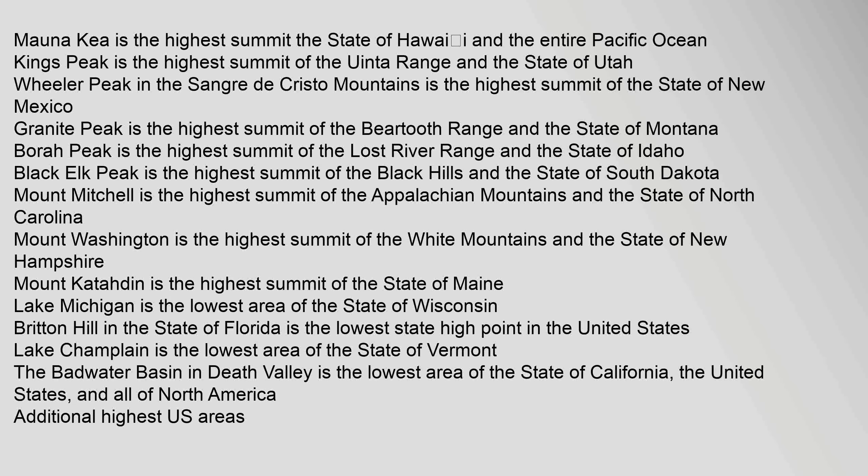Mauna Kea is the highest summit in the state of Hawaii and the entire Pacific Ocean. Kings Peak is the highest summit of the Uinta Range and the state of Utah. Wheeler Peak in the Sangre de Cristo Mountains is the highest summit of the state of New Mexico. Granite Peak is the highest summit of the Beartooth Range and the state of Montana. Bora Peak is the highest summit of the Lost River Range and the state of Idaho. Black Elk Peak is the highest summit of the Black Hills and the state of South Dakota. Mount Mitchell is the highest summit of the Appalachian Mountains and the state of North Carolina. Mount Washington is the highest summit of the White Mountains and the state of New Hampshire. Mount Katahdin is the highest summit of the state of Maine.